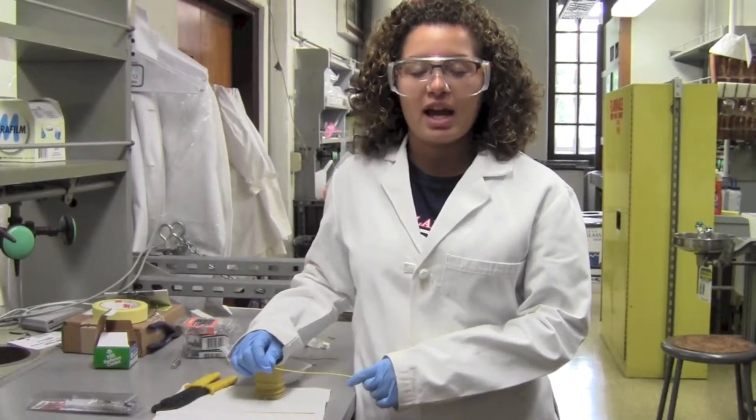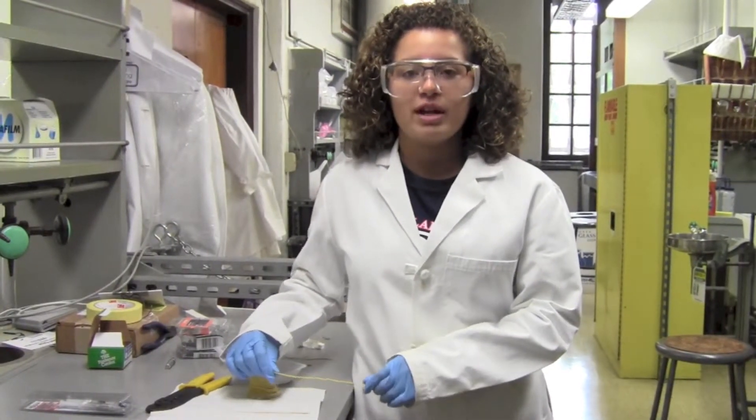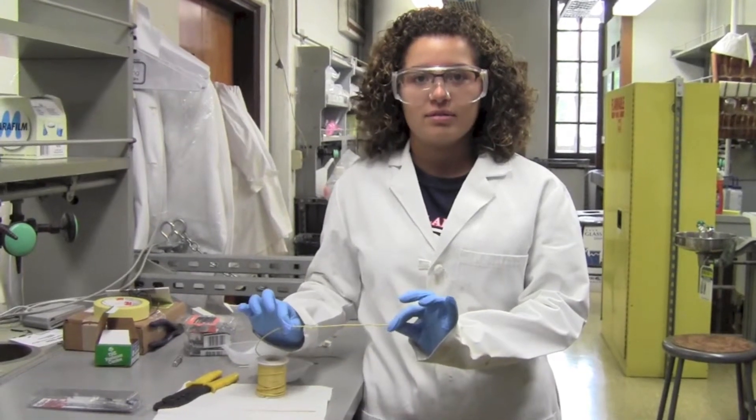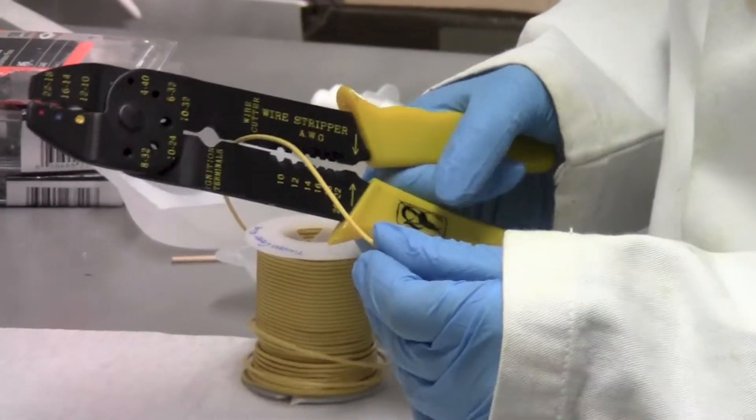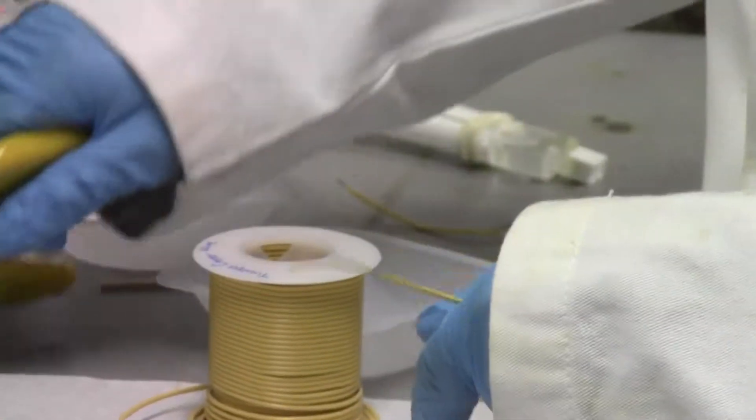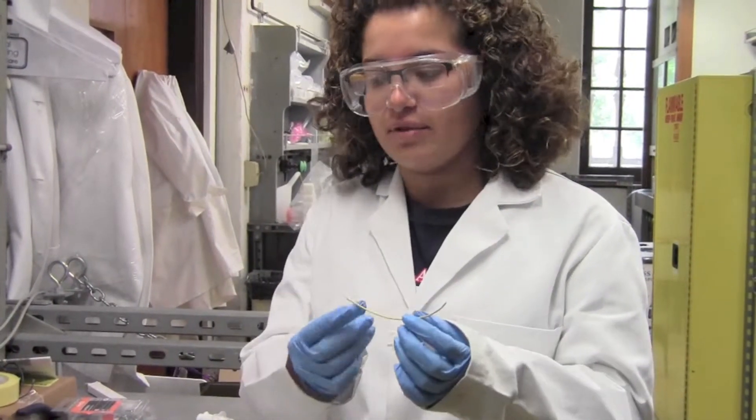To prepare the plate for scouting, you will first need to cut a 3 to 4 inch piece of wire. You will then need to strip both ends of the wire.